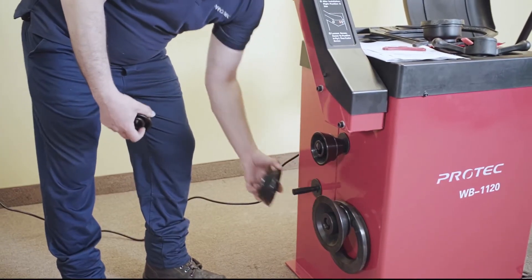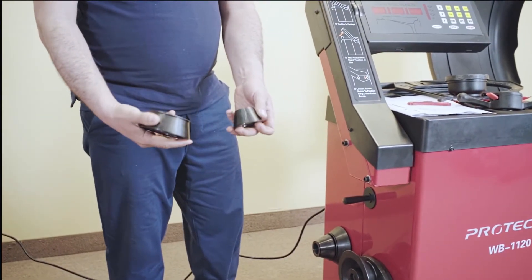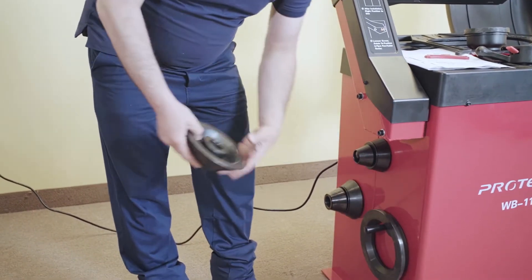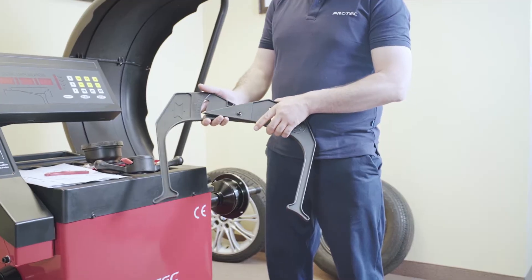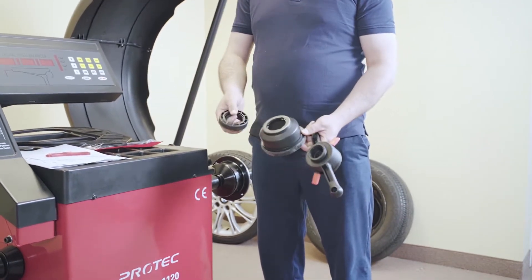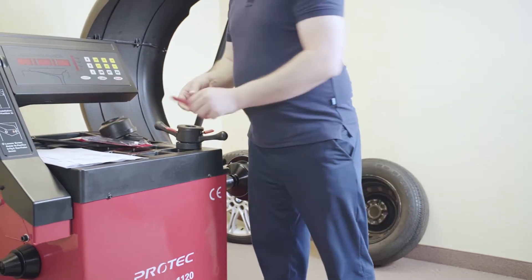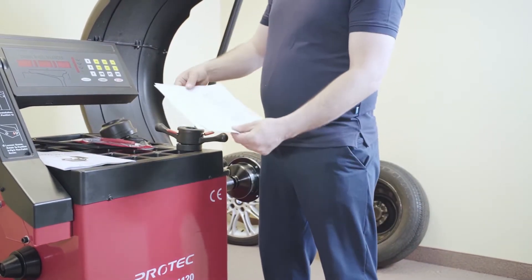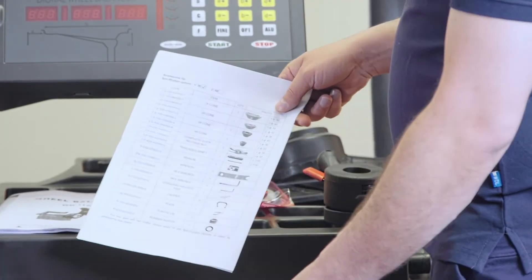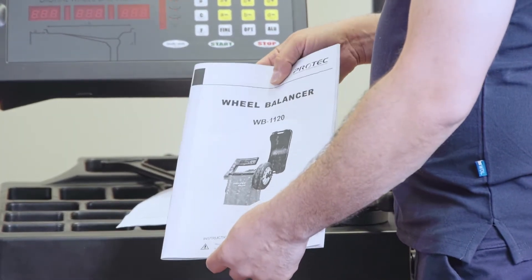The machine comes with four sets of cones for different sizes, truck adapter as well as a flange for the truck adapter, manual width gauge, quick nut and two different adapters for the quick nut. It also comes with a weight hammer, calibration weight as well as instructions for installation, assembly of the machine and the parts list and instruction manual on how to perform the calibration in case you forget.